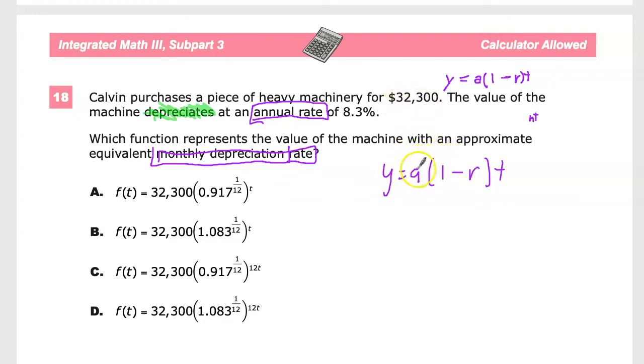I subtract that amount's percentage of 8.3%. So I'll do 32,300 and whatever 8.3% of that is, subtract that out. That'll give me my new value for the second step.